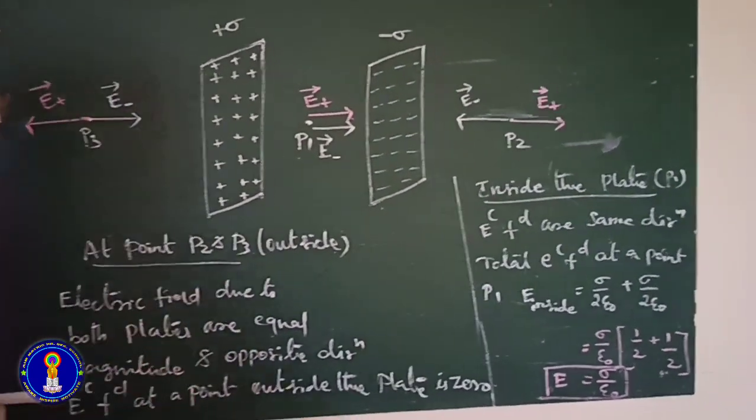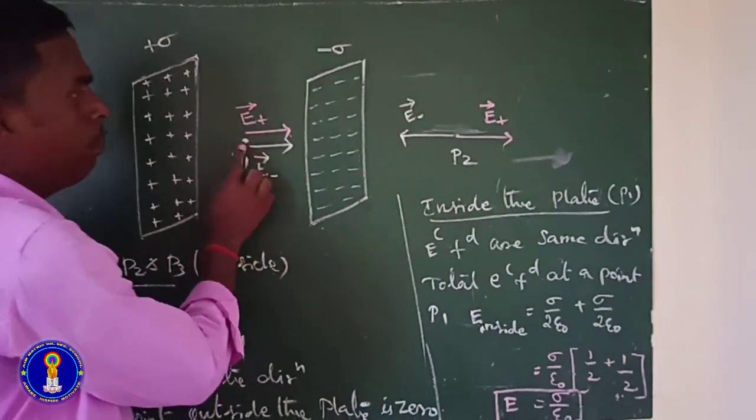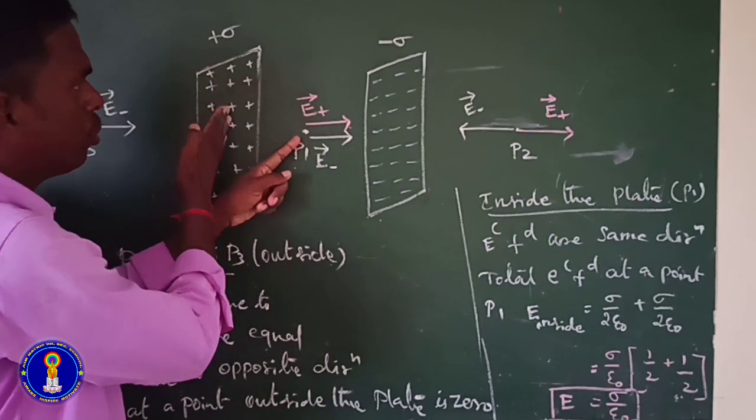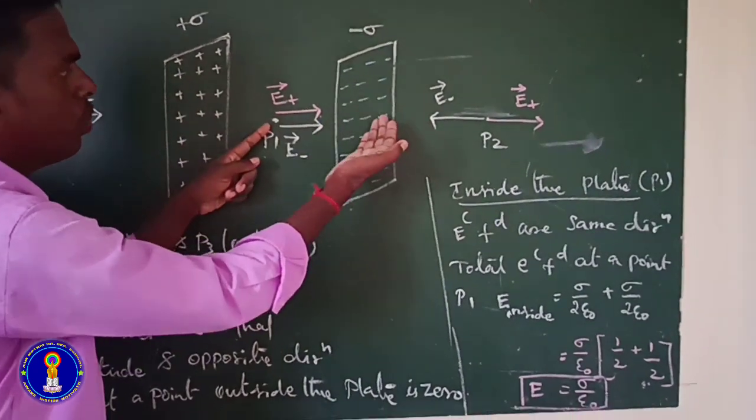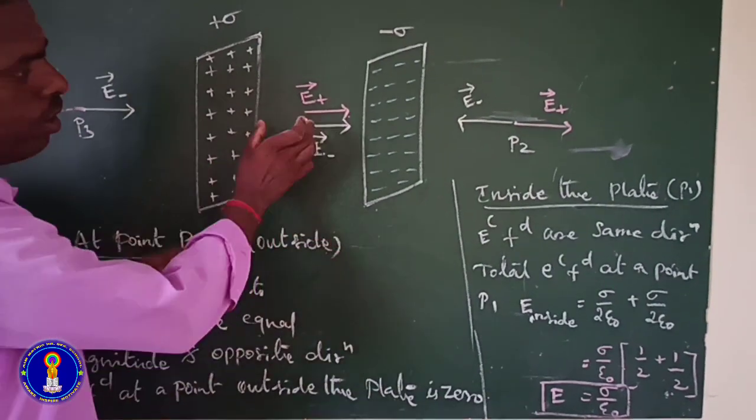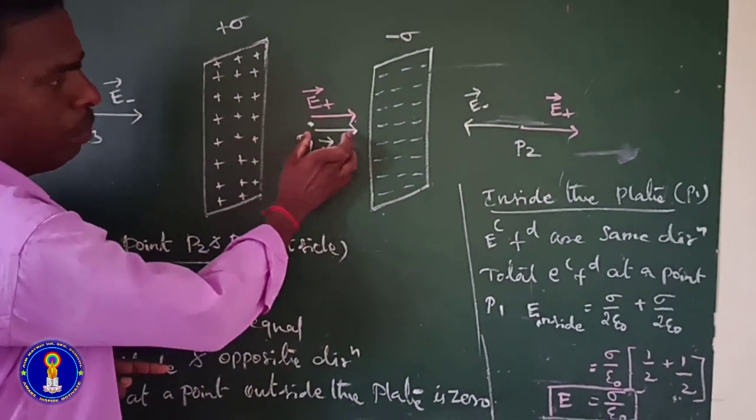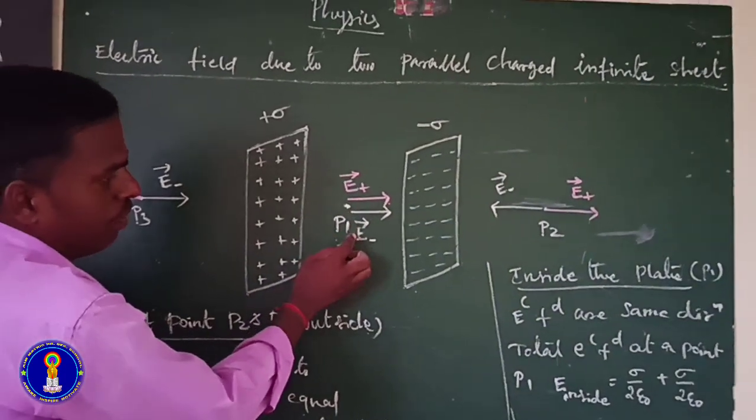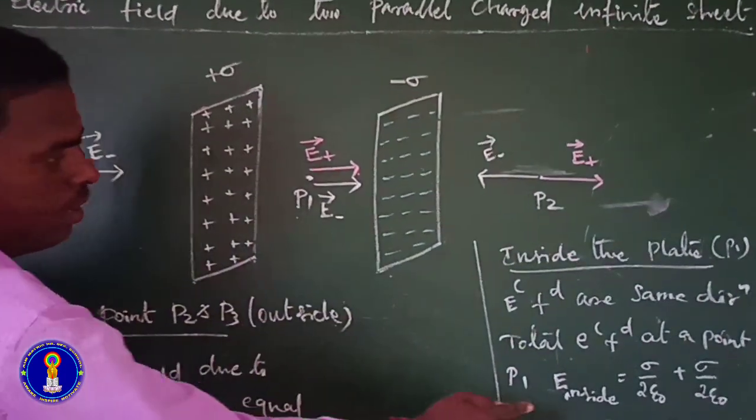Inside the plate at P1, the electric field due to positive charge and electric field due to negative charge both are in the same direction. So the total electric field at point P1, inside, is equal to